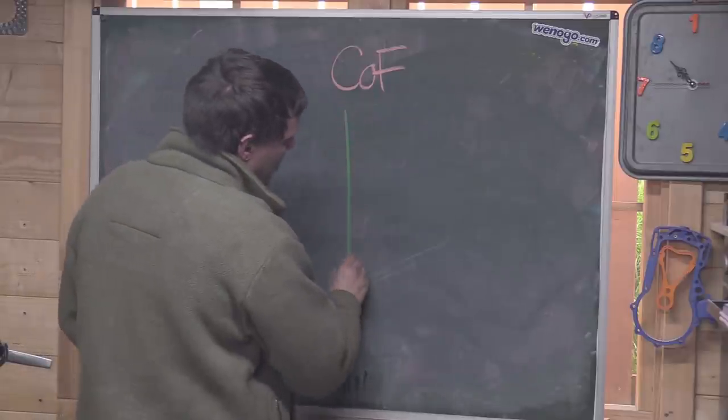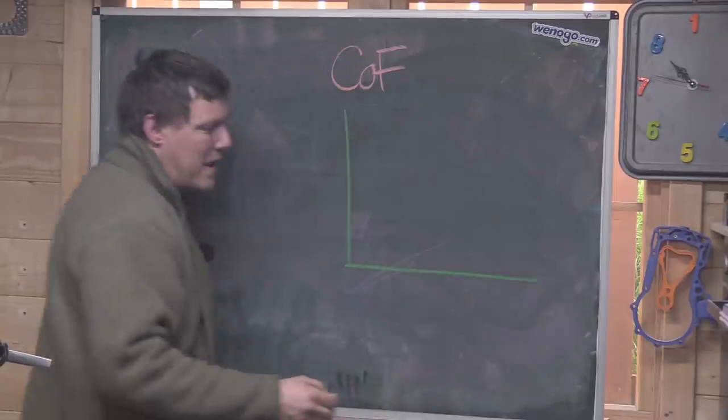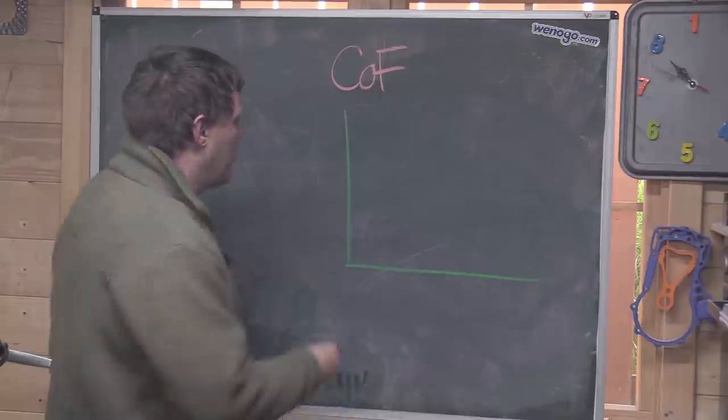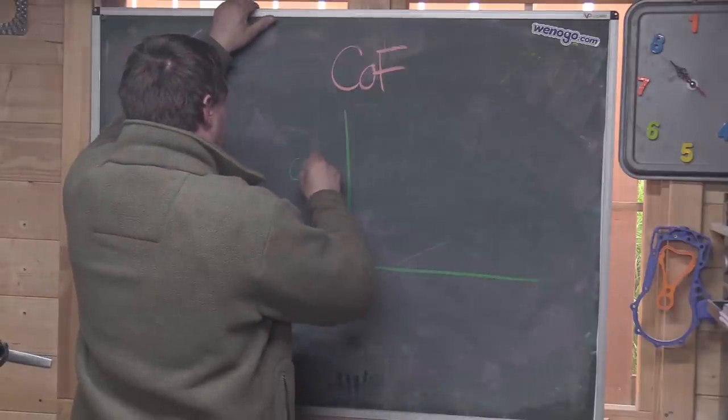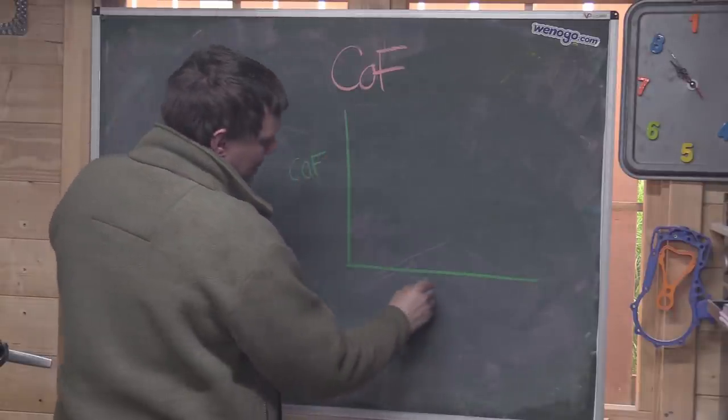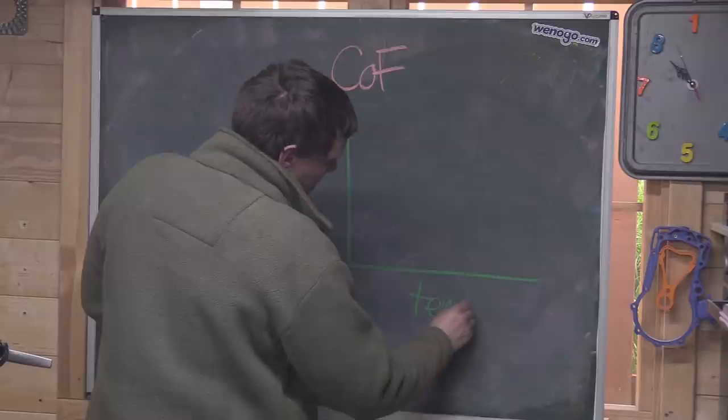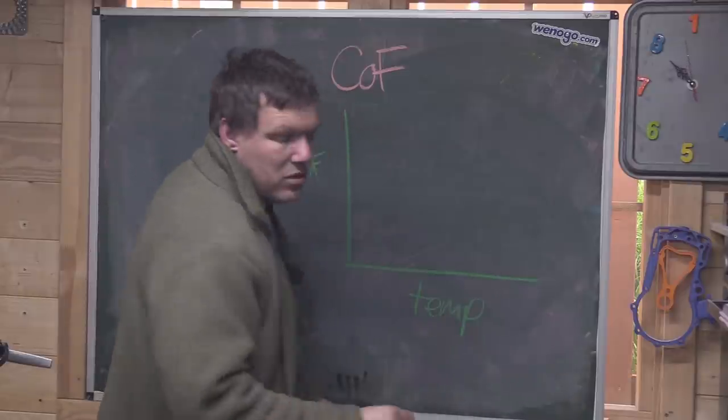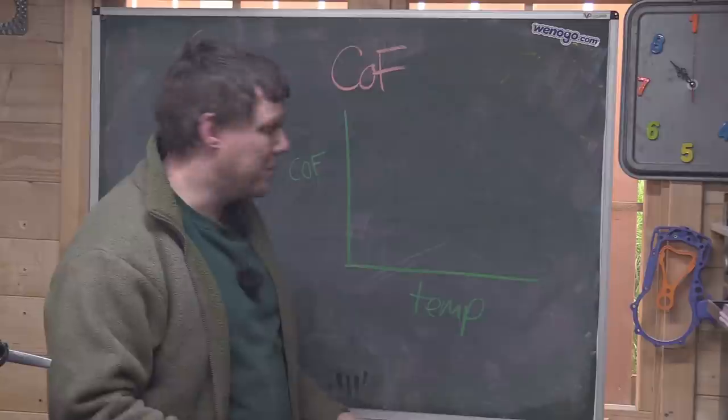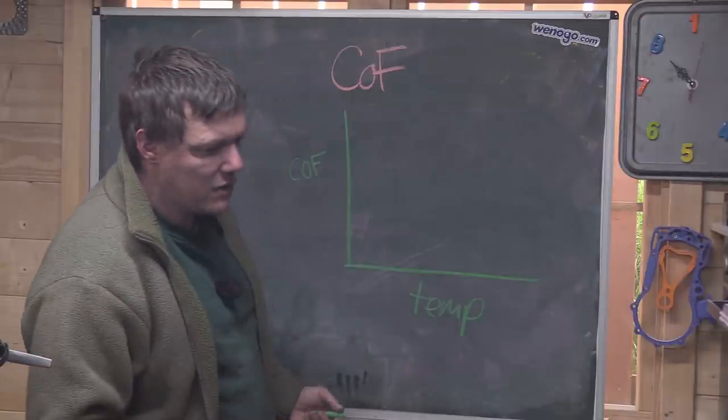So what you end up with is a graph. What we're going to do is plot CoF versus temperature, because we are talking in this video about carbon brake systems.